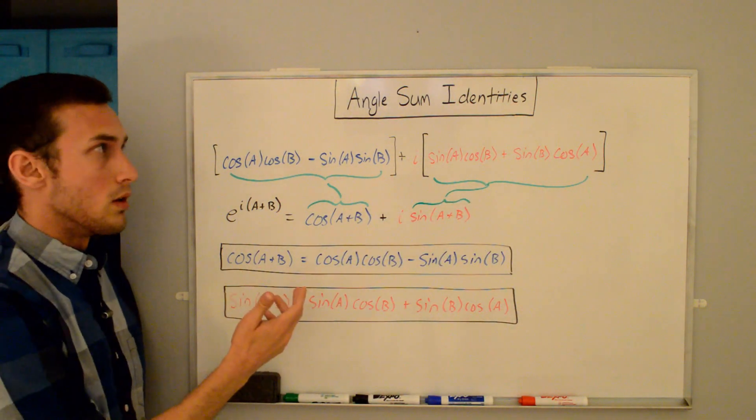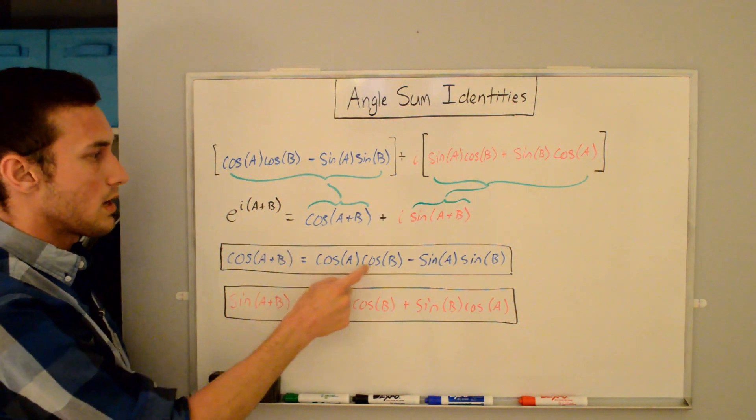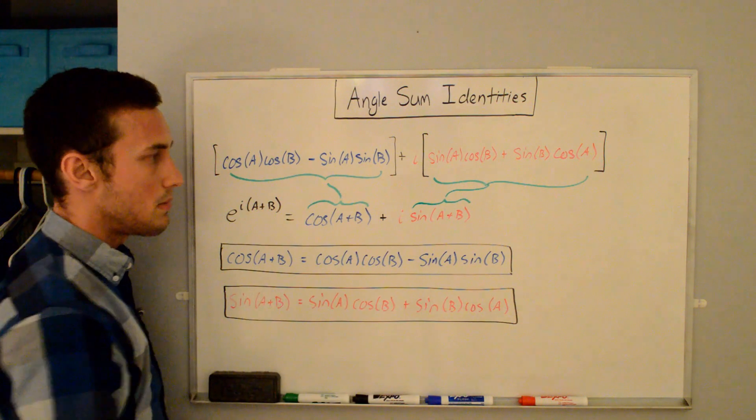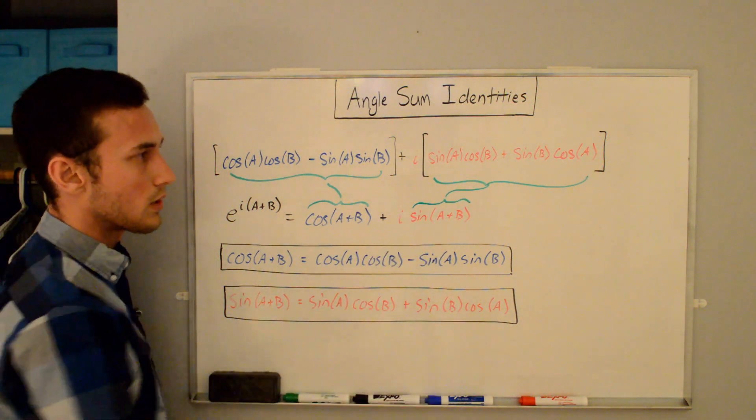And if we just write these out, these are our final angle sum identities. So for cos(A+B), we have cos(A)·cos(B) - sin(A)·sin(B). And for sin(A+B), we have sin(A)·cos(B) + sin(B)·cos(A).